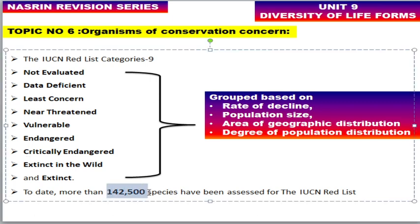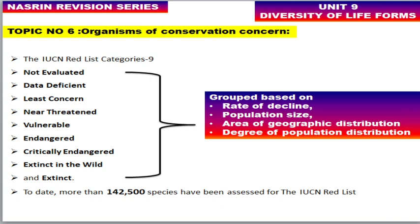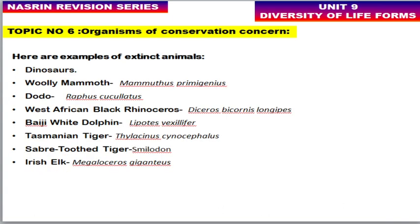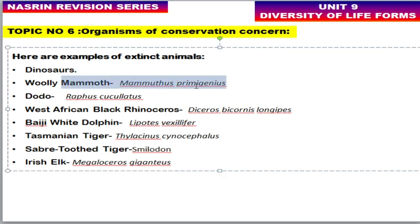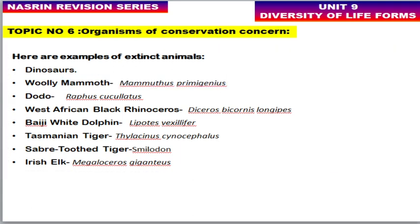To date, a total of 142,500 species have been assessed by IUCN. Examples of extinct animals that are frequently asked about in exams include dinosaur, woolly mammoth, dodo, West African black rhino, Baiji white dolphin, Tasmanian tiger, saber-tooth tiger, and Irish elk. Please pay attention to the scientific names of these animals.